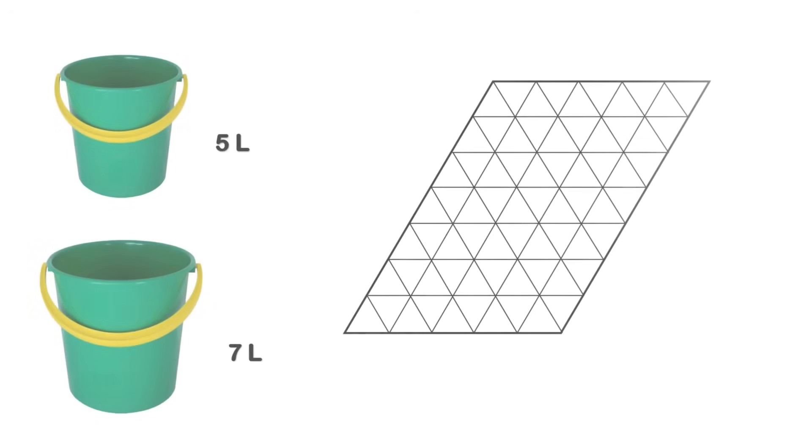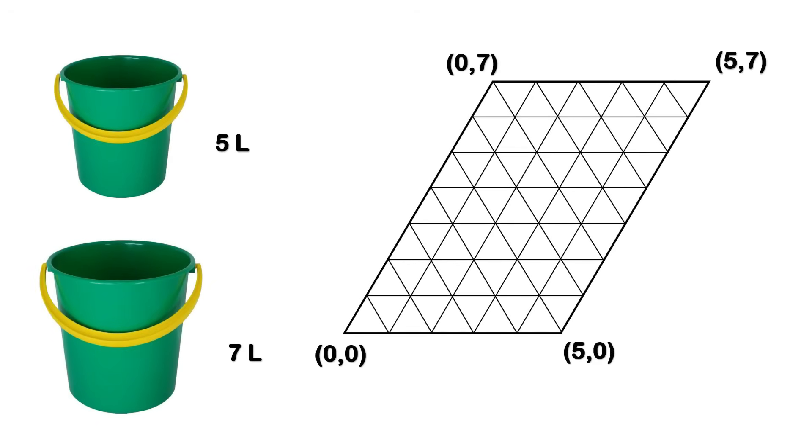Now let's take this one step further. Instead of the usual rectangular coordinate grid, we consider a grid with a 60-degree angle, a grid made of equilateral triangles, not squares. Inside this grid, we draw a parallelogram with side lengths of five units and seven units. The corners of this shape correspond exactly to the fully empty or fully full states of buckets.